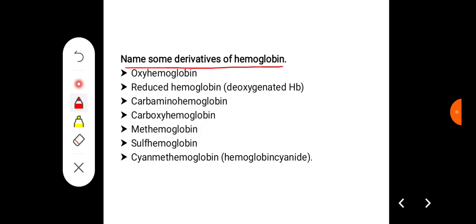Name some of the derivatives of hemoglobin. The derivatives of hemoglobin are oxyhemoglobin, reduced hemoglobin (that is deoxygenated hemoglobin), carbaminohemoglobin, carboxyhemoglobin, methemoglobin, sulfhemoglobin, and cyanmethemoglobin.